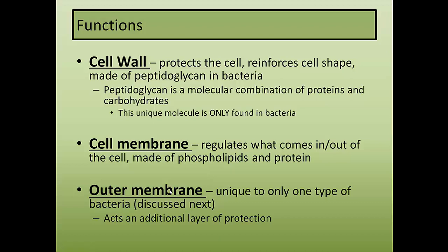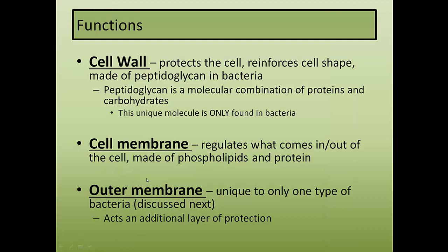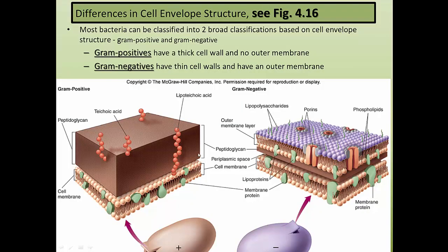The outer membrane is unique to only one type of bacteria — the gram negatives, discussed next. It acts like an extra cell membrane, providing an additional layer of protection and filtration. In some microbes, this outer membrane is the most outer layer in direct contact with the environment.